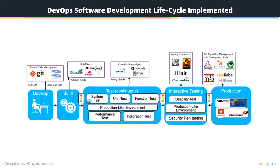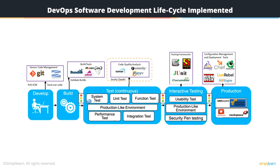This is how it would look if you were to deliver all the DevOps SDLC steps using a pipeline. We still have our developer placing code into a source control management system like Git, which can be continuously polled using a continuous integration system like Jenkins, that can run various tools like Maven or Ant to create a build from the source code repository — all automated. In order to validate the build, you can integrate Jenkins with tools like Sonar or Fortify that help with various validation and quality checks on your builds.